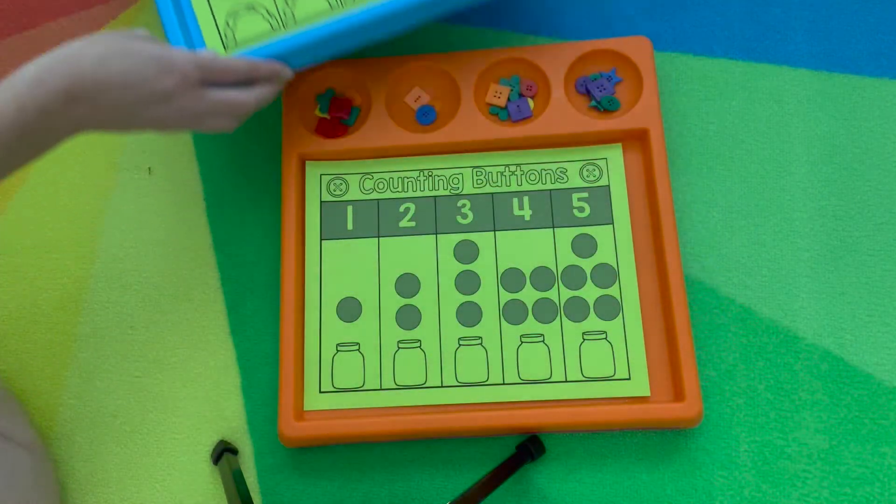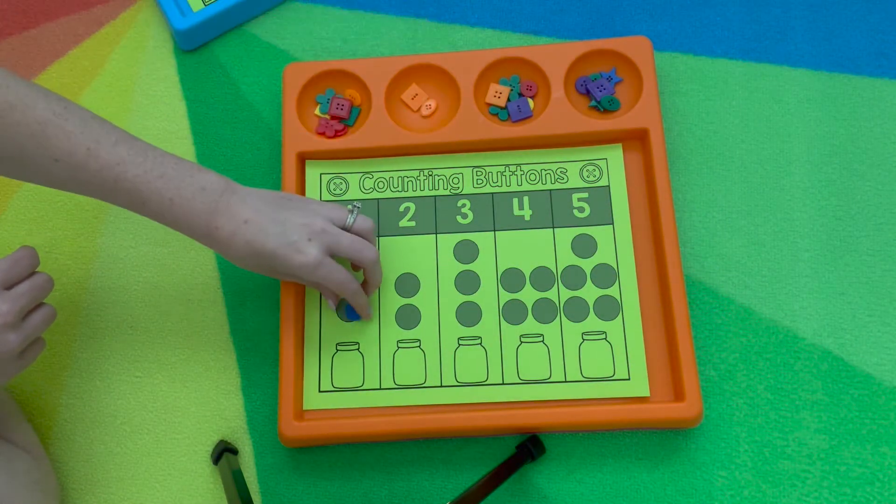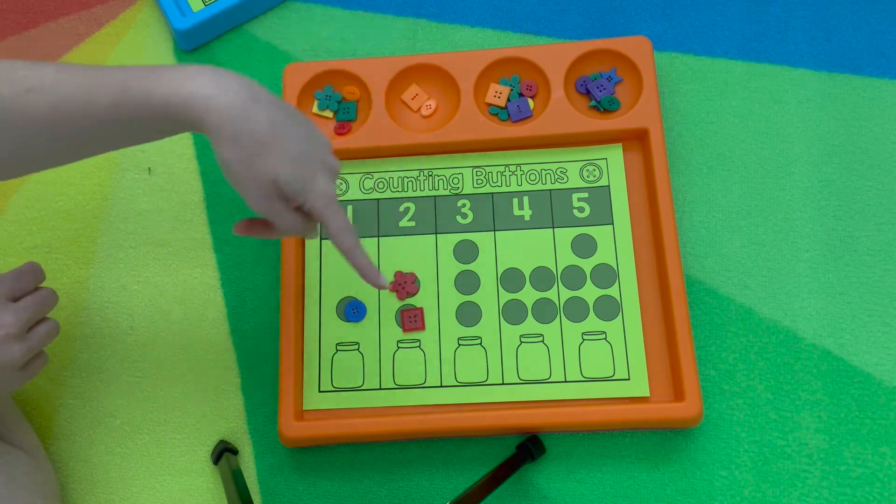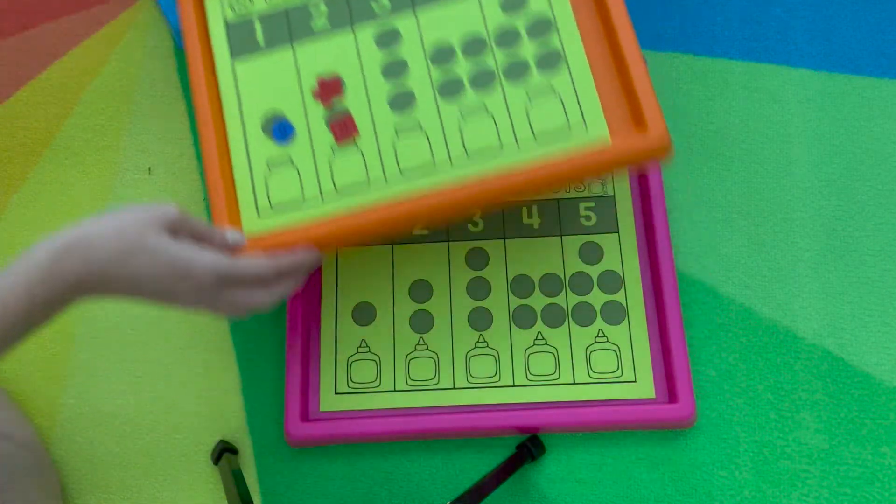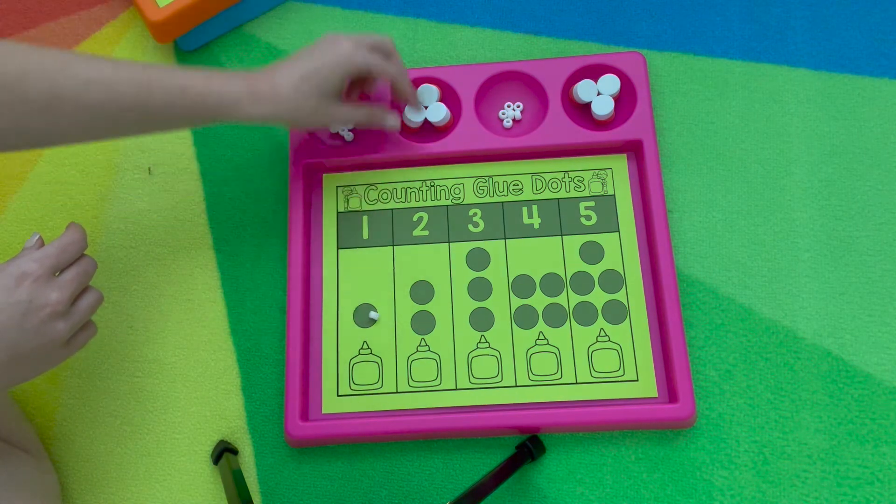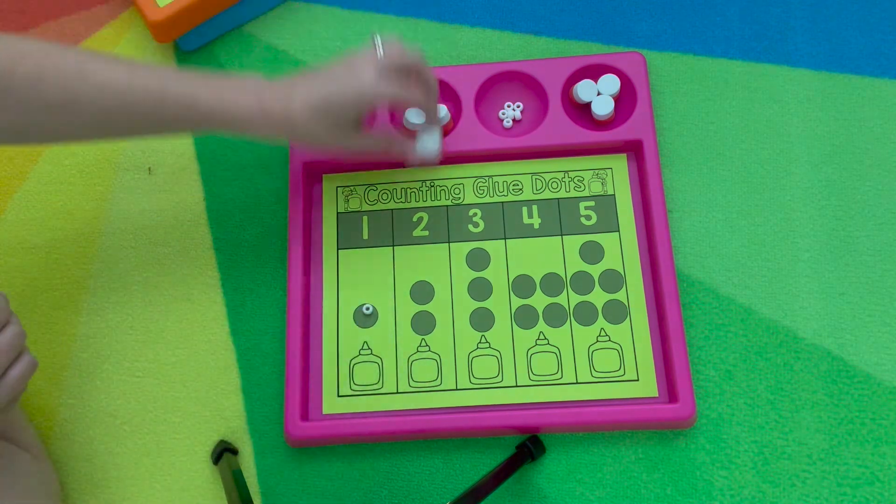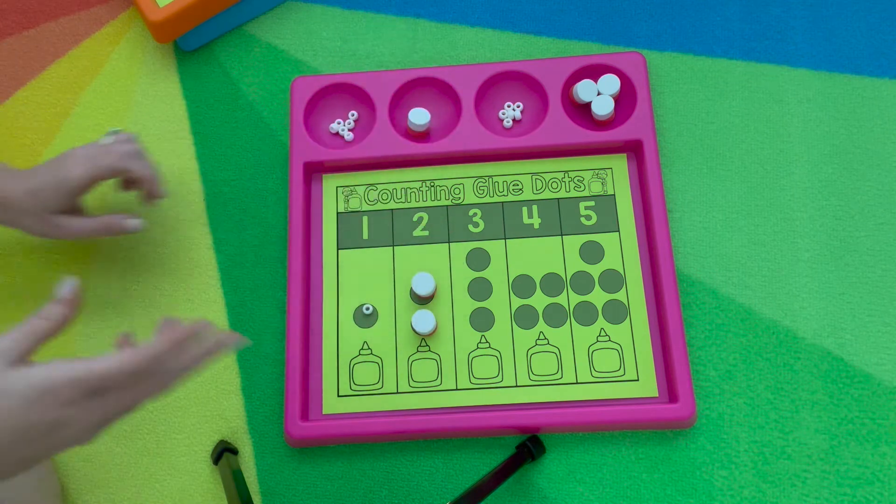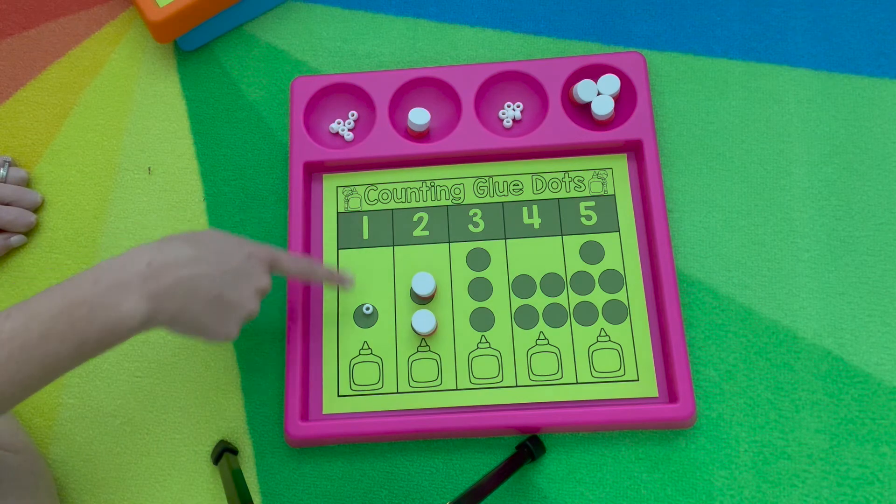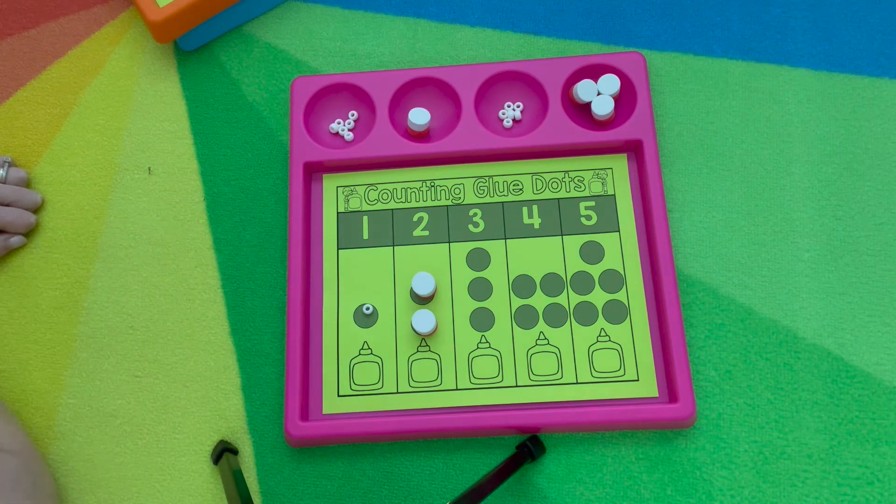The next mat is counting buttons. So they have their counters. One, one, two. And continue until they finish. Another version is counting glue. One, two, one, two. Just building that one-to-one and think about how they're modeling. They're using different counters. They're matching numbers. So you can always go back to that essential question.